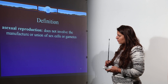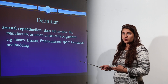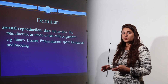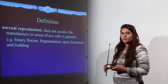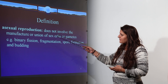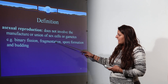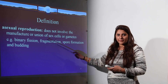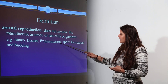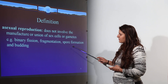In sexual reproduction, there is the formation and fusion of male or female gametes, and the fusion leads to formation of an embryo or a zygote. Asexual reproduction comprises binary fission, fragmentation, spore formation, and budding, which happen in different organisms.